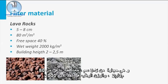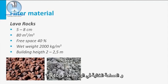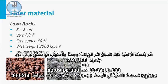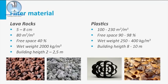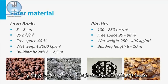Traditionally, lava rocks are used. These are 5 to 8 cm stones with a specific surface of 80 square meter per cubic meter. The wet weight is 2000 kg per cubic meter and the free space in the bed is about 40%. Trickling filters with this filling material have a height of 2 to 2.5 meters. High-rate trickling filters are filled with plastic with a specific surface of 100 to 230 square meter per cubic meter. The free space in the bed is 90 to 98% and the wet weight is only 250 to 400 kg per cubic meter, so the average height of such a trickling filter can be 8 to 10 meters.